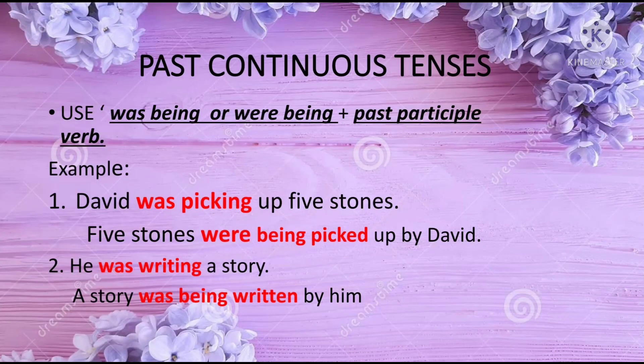When you have the past continuous tense, use was being or were being and the past participle verb. David was picking up five stones — five stones were being picked up by David. He was writing a story — a story was being written by him. Note: five stones being plural, you use were; a story being singular, you use was.